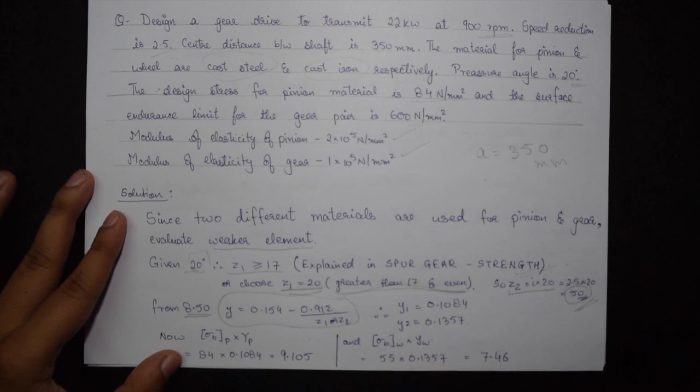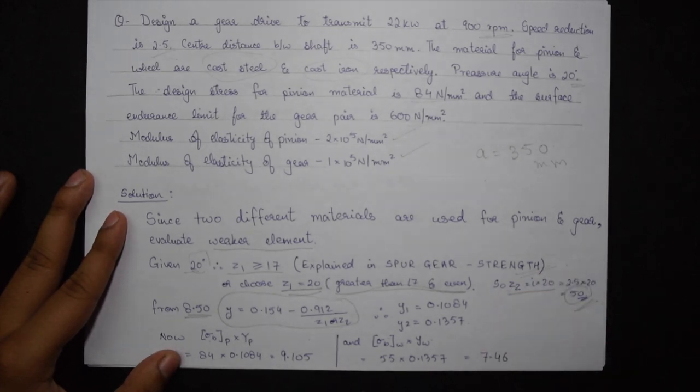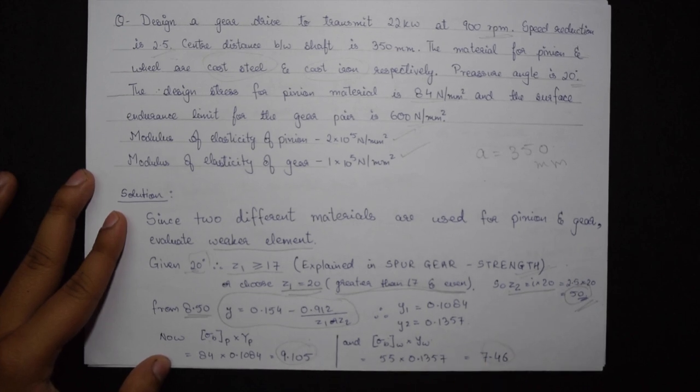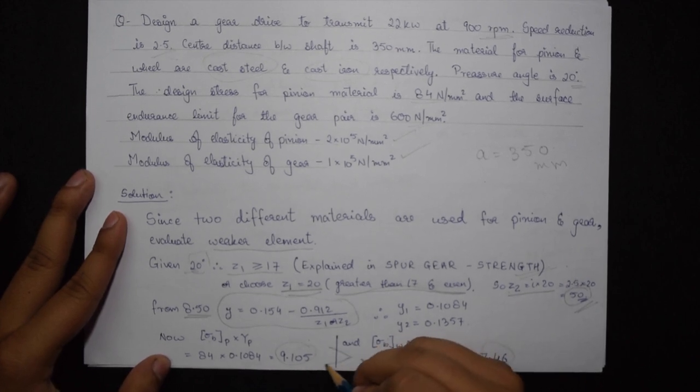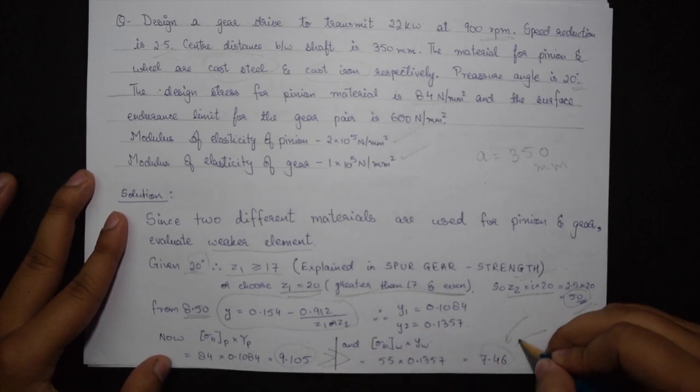We get two values of Y by putting into this formula the values of Z1 and Z2 separately. Multiplying them I get the value for pinion as 9.105 and for wheel as 7.46. As we know that 7.46 is less than 9.105, this wheel becomes the weaker element.